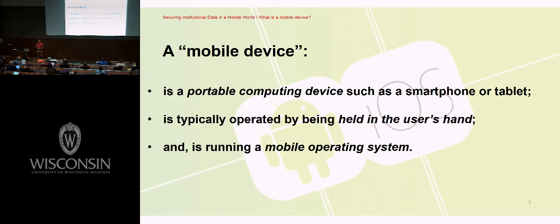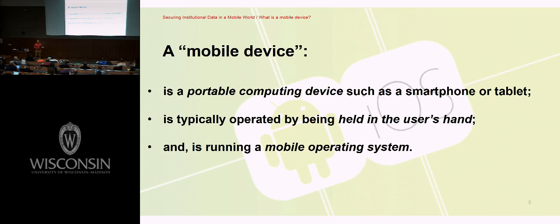What makes mobile devices unique in the context of how we manage them when they're accessing corporate or organizational data is that they're running a different operating system than a lot of our other devices. Things running traditional desktop operating systems — Mac OS, Windows — over the last 15 to 20 years, we've brought these systems into management regimes and now have worthwhile anti-malware and security software running on them. From Windows XP to Windows 10, we've come a long way. That's what we think of as a mobile device.